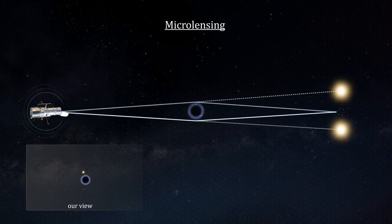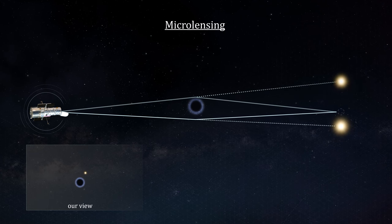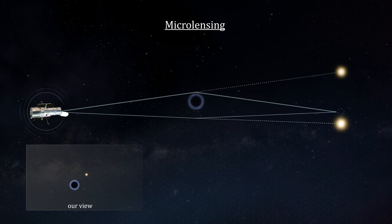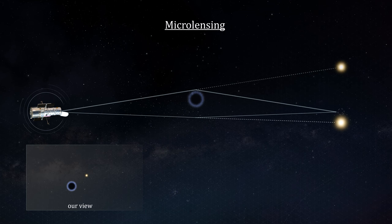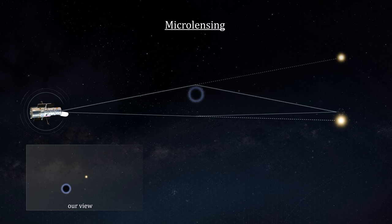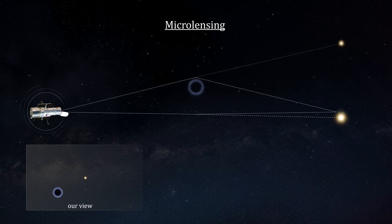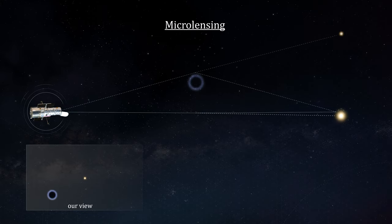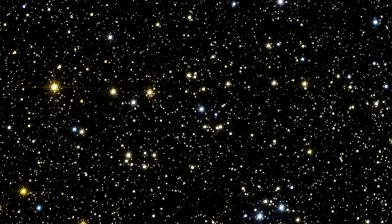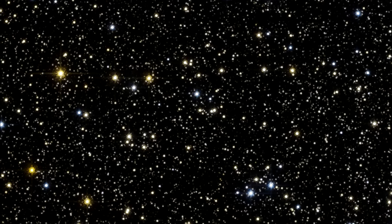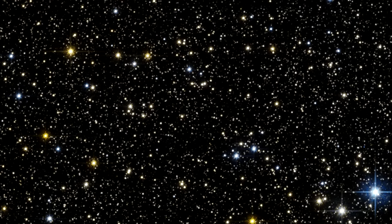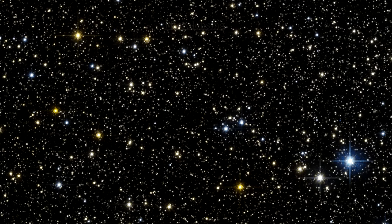It's estimated that there are over 100 million free-roaming black holes in the Milky Way, representing almost 1% of the galaxy's total mass. The few dozen stellar-mass black holes discovered so far have been found in X-ray binary systems. Astronomers had not identified an isolated black hole until Hubble found one drifting through interstellar space in 2022.